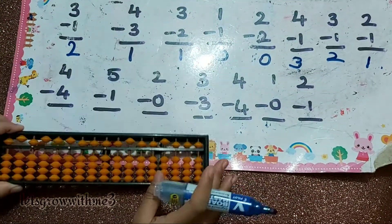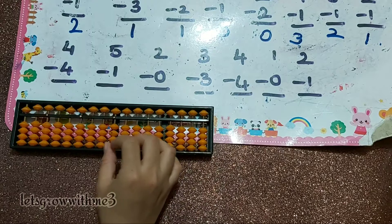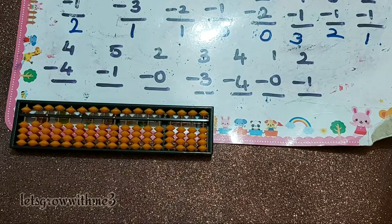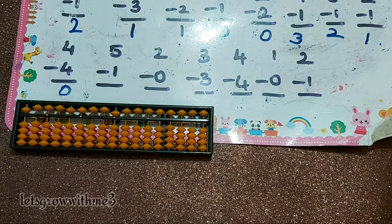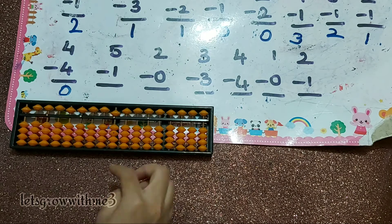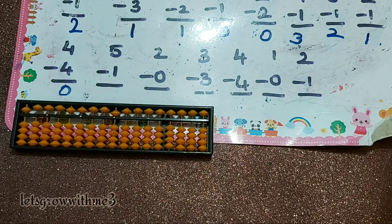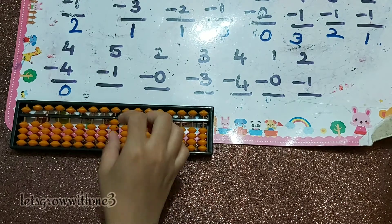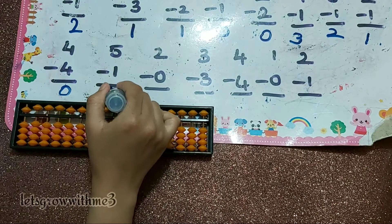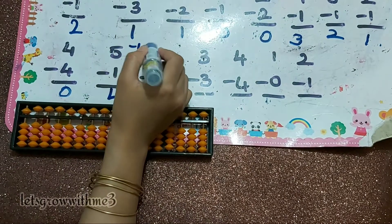Very easy problems — I am giving these for practice. 4 minus 4 — answer is 0. Next: 5 minus 1. Now see how to do minus 1 — you don't have beads, so we must use the small friend method. What's the complementary for minus 1? Plus 4. So: minus 5 plus 4 — answer is 4.